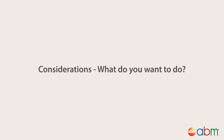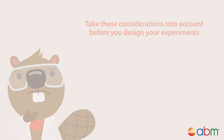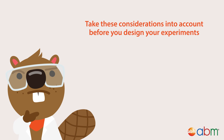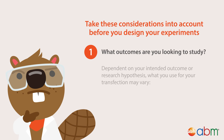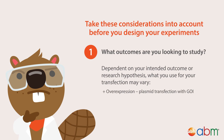Considerations. What do you want to do? Take these considerations into account before you design your experiment. First, what outcomes are you looking to study — overexpression, knockdown, or knockout? Depending on your intended outcome or research hypothesis, what you use for your transfection may vary. Overexpression: plasmid transfection with GOI. Knockdown: RNAi or miRNA. Knockout: CRISPR-Cas9.